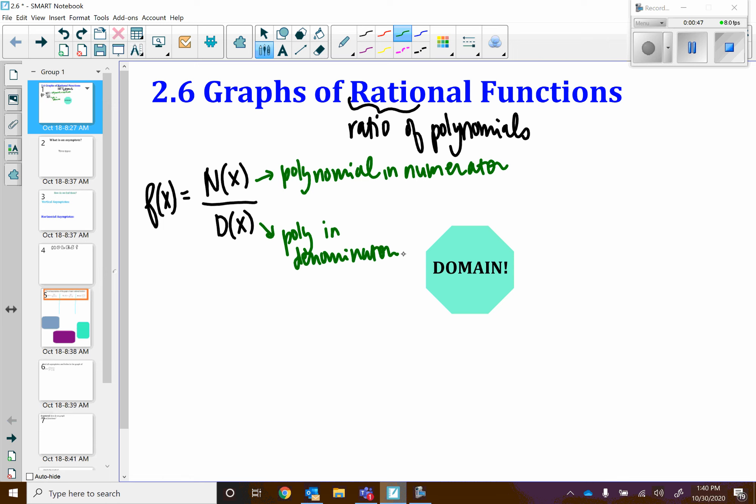So an example of a rational function would be, let's say, 4x cubed plus 2x, that's a polynomial, divided by 7x squared minus 8, that's a polynomial. Or, a very simple version, f of x is equal to 1 over x. This is our basic rational function, right, from our 12 basic.